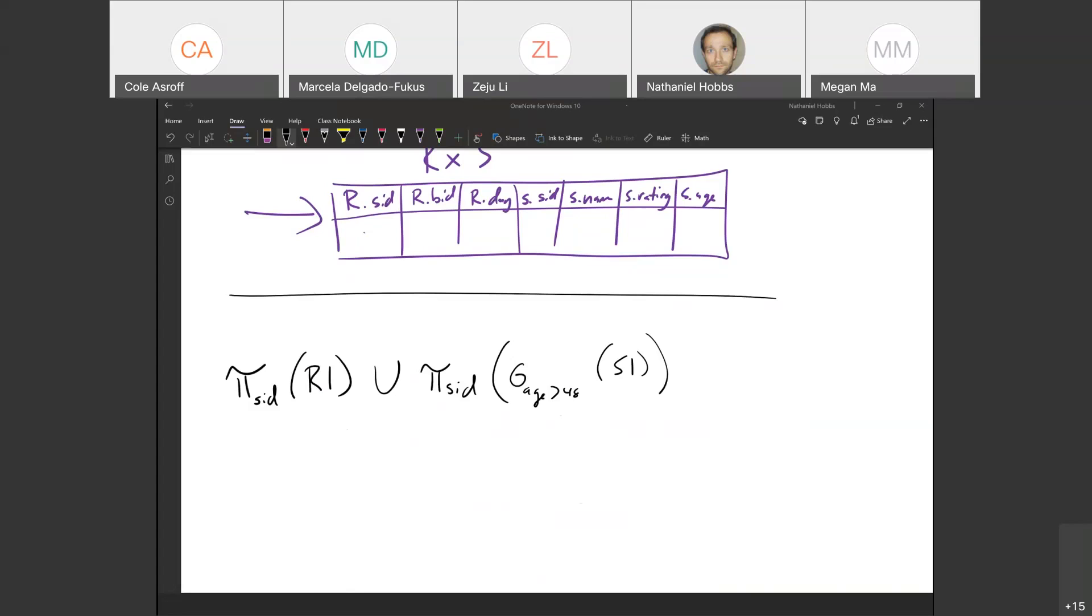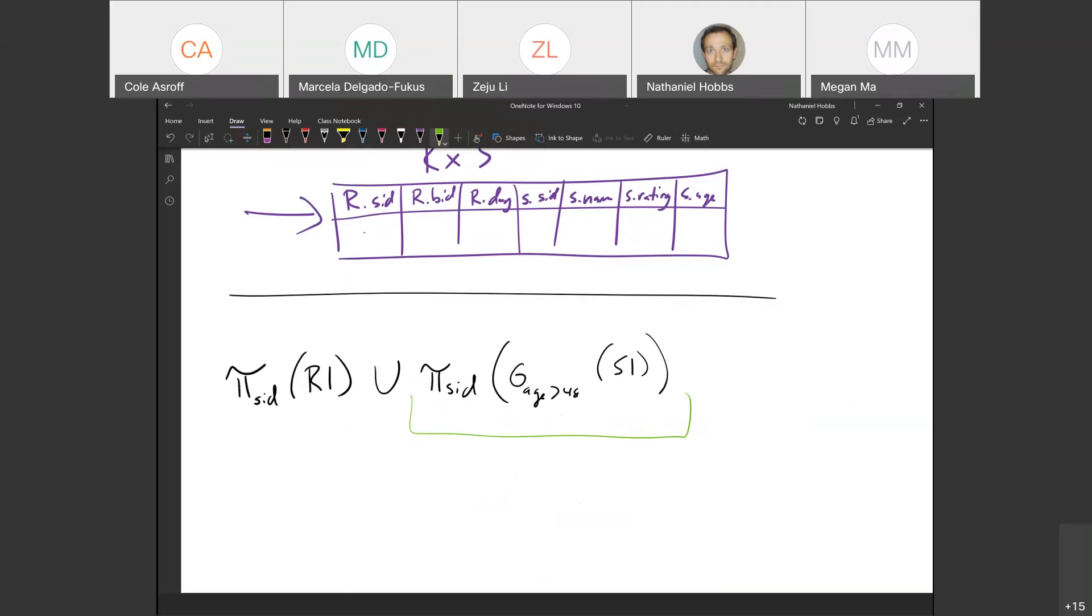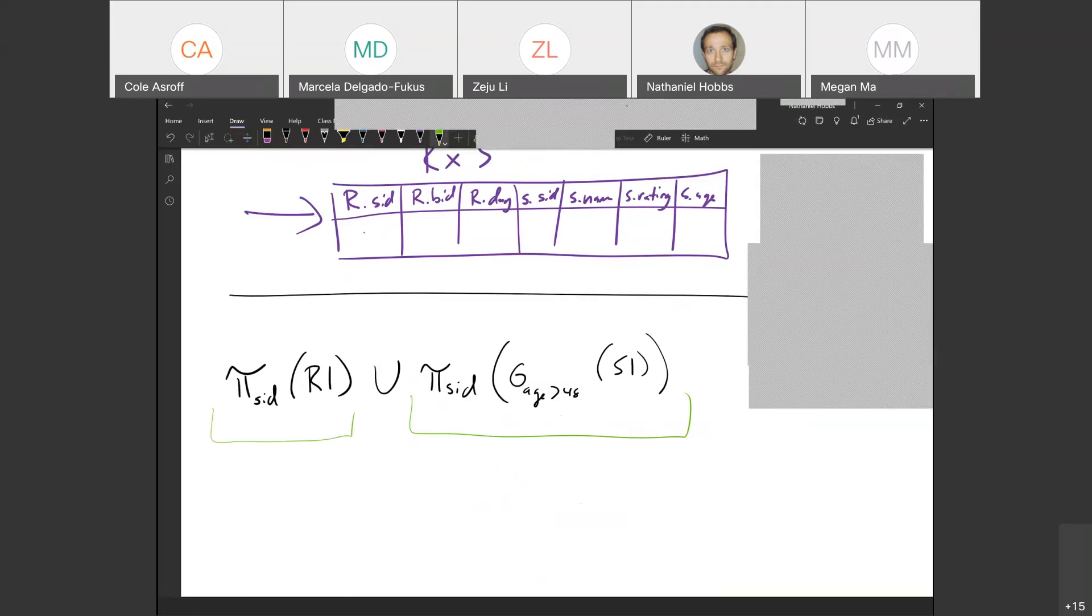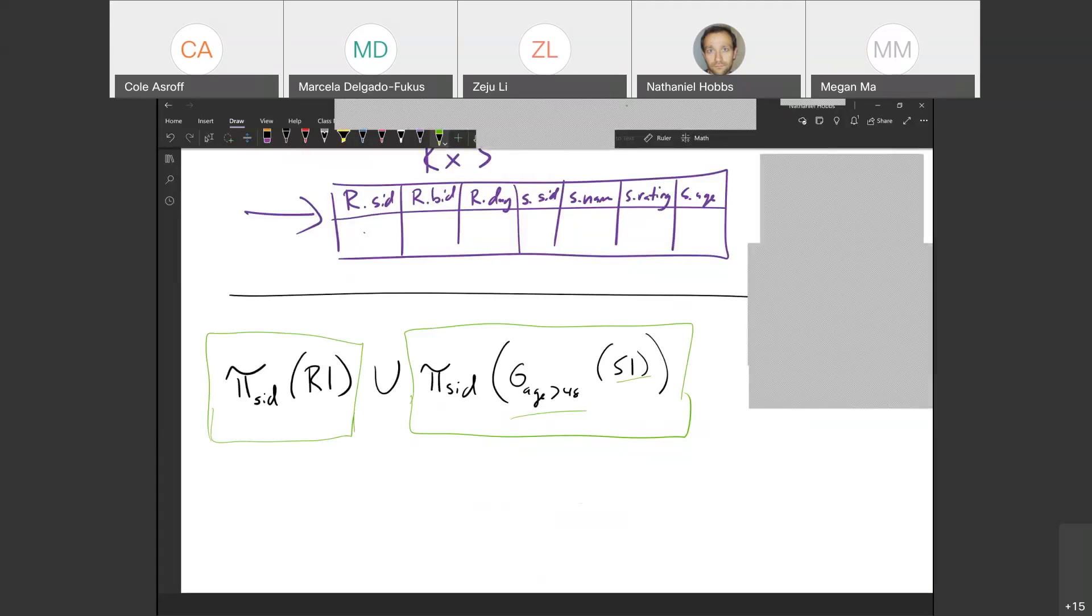Okay, one thing - not a cross product, no cross product. Yeah, that's the X, that's the cross product. So this returns SIDs from table S1 where the age is greater than 48. Whatever those SIDs are, union them with the SIDs from the first relation. That's all it's doing. It's taking all of the SIDs from relation one, and then it's adding to that the SIDs from S1 where they're over 48.